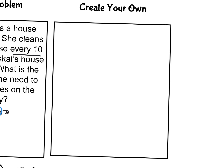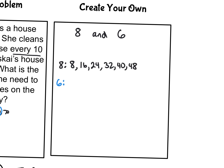Pause the video and think about creating a problem of your own. If you can't think of one, go ahead and try the numbers 8 and 6 and find the least common multiple of those two numbers. I'm going to use 8 and 6. Counting by 8s: 8, 16, 24. You can use that multiplication table — 8 times 4 is 32, 8 times 5 is 40, 48. I'll stop there.